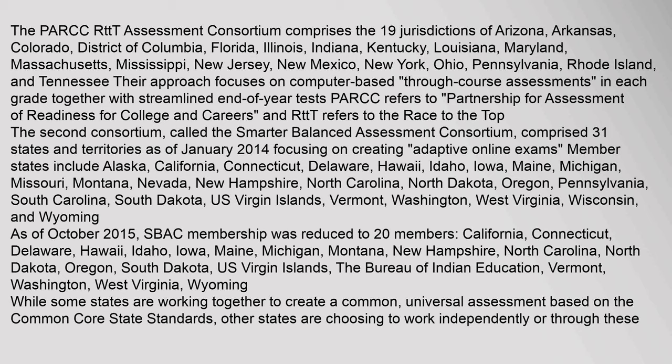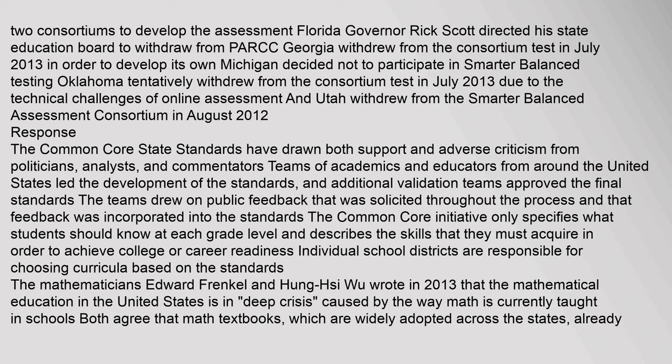As of October 2015, SBAC membership was reduced to 20 members: California, Connecticut, Delaware, Hawaii, Idaho, Iowa, Maine, Michigan, Montana, New Hampshire, North Carolina, North Dakota, Oregon, South Dakota, U.S. Virgin Islands, the Bureau of Indian Education, Vermont, Washington, West Virginia, and Wyoming. While some states are working together to create a common universal assessment, other states are choosing to work independently. Florida Governor Rick Scott directed his state education board to withdraw from PARCC; Georgia withdrew in July 2013; Michigan decided not to participate in Smarter Balanced testing; Oklahoma tentatively withdrew in July 2013; and Utah withdrew from SBAC in August 2012.